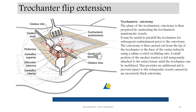Trochanteric osteotomy. The plane of the trochanteric osteotomy is prepared by cauterizing the trochanteric anastomotic vessels. It may be useful to pre-drill the trochanter for subsequent reattachment prior to osteotomy. The osteotomy is carried out from the tip of the trochanter to the base of the vastus tubercle using an oscillating saw. A small portion of the medial strand is left temporarily attached to the intact femur until the trochanter can be mobilized. This provides an additional aid to prevent injury to the retinacular vessels caused by excessive lateral osteotomy. Notice the plane of the trochanteric osteotomy — it's very crucial. Deeply investigate this slide.